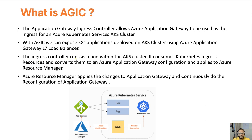The ingress controller runs as a pod within the AKS cluster. Whenever we configure AGIC, the ingress controller will run on our AKS cluster as a pod. As you can see in this diagram, this is another pod which is deployed when we configure AGIC. It consumes Kubernetes ingress resources and converts them to Azure Application Gateway configuration.